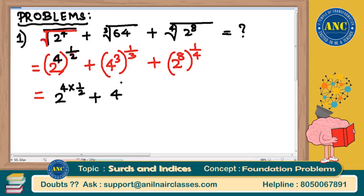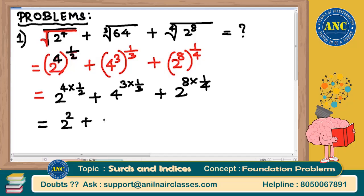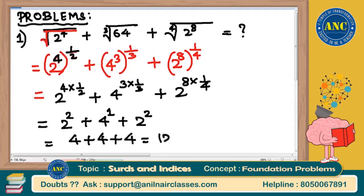So the first term gives 2 power (4 × 1/2) = 2 power 2. The second term gives 4 power (3 × 1/3) = 4 power 1. The third term gives 2 power (8 × 1/4) = 2 power 2. So it is 2 squared + 4 power 1 + 2 squared = 4 + 4 + 4 = 12. Answer for the first question is 12.